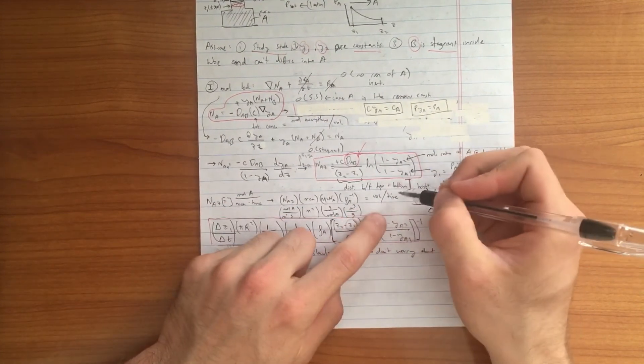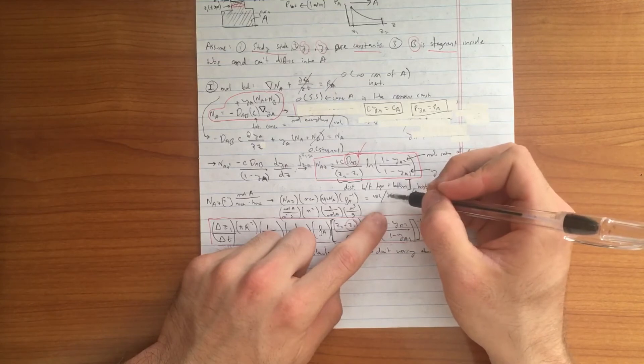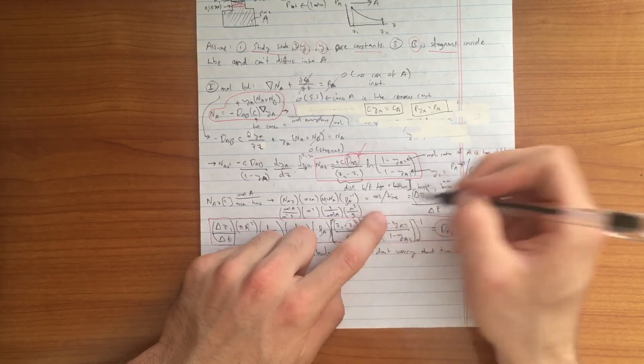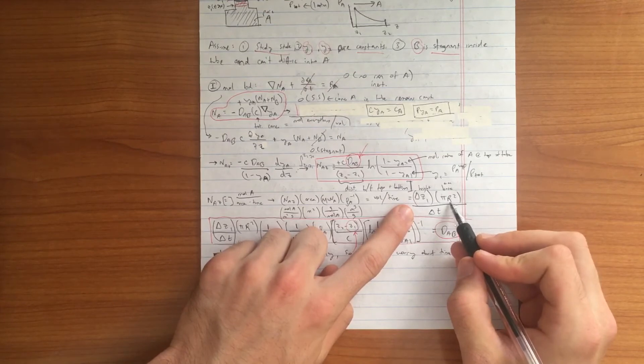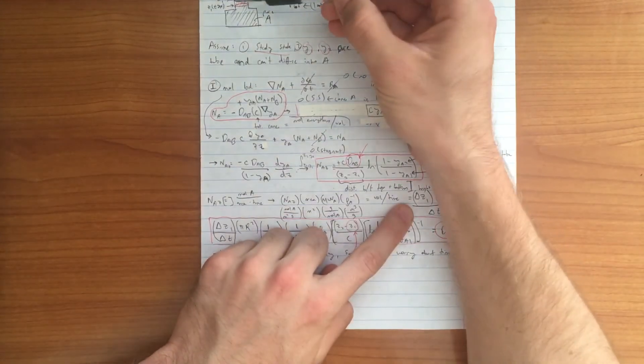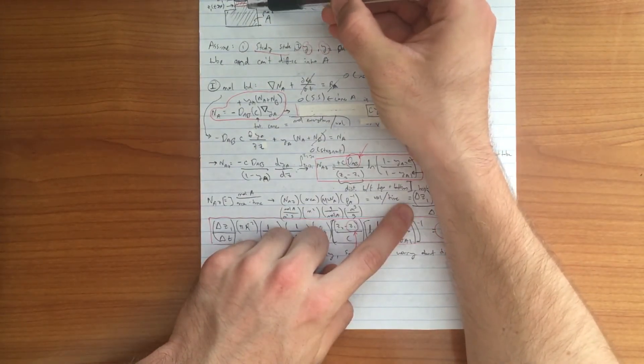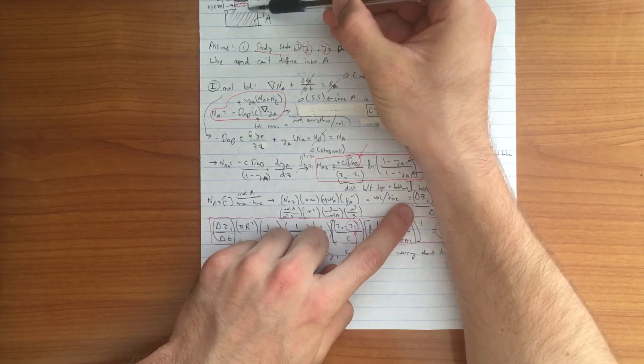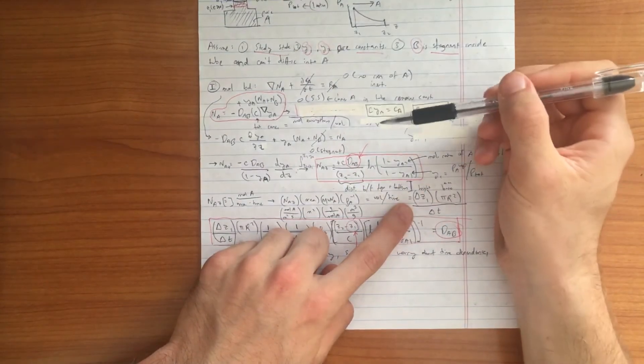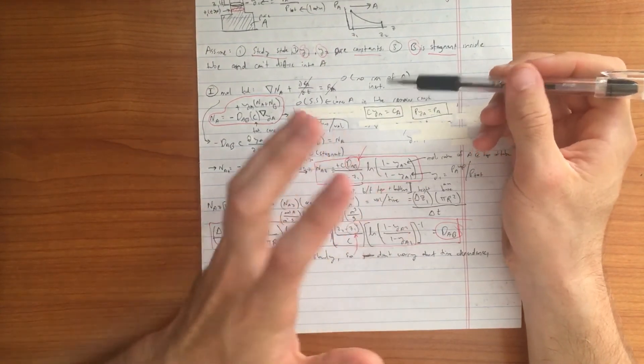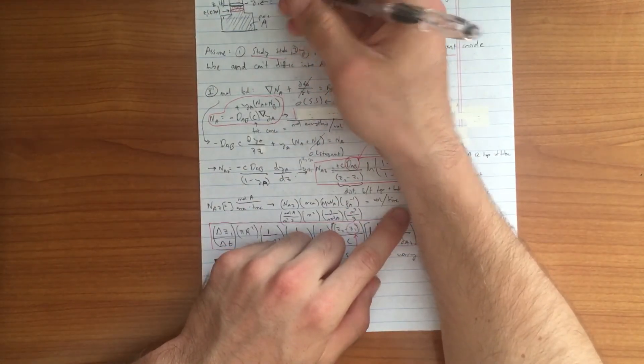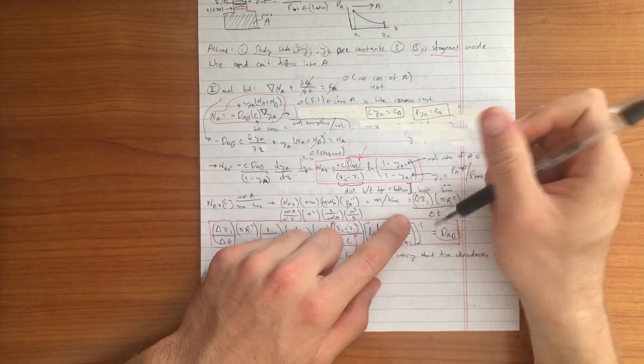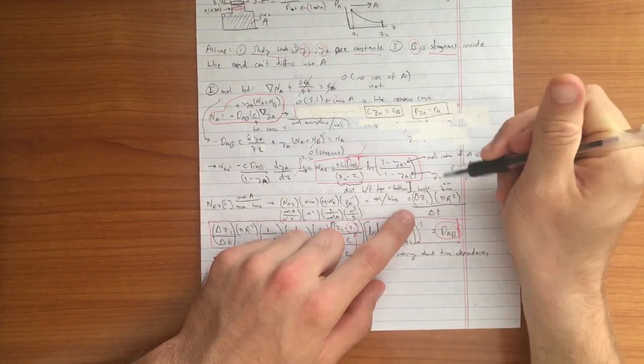This volume per time component, we can now analyze what happens over time. This is the point where we will take into account the change in height of the Arnold cell control volume. It's slowly diffusing in. Delta Z could be just a few millimeters or centimeters.